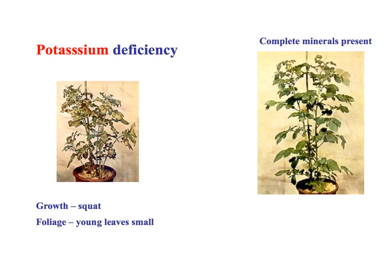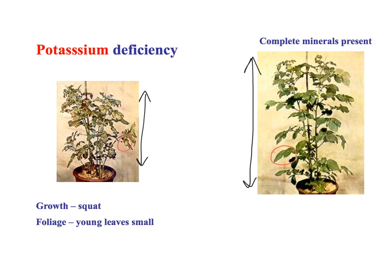Potassium deficiency looks quite similar. We've got quite squat, small growth. You can see potassium deficiency is causing growth issues - we've got young leaves that are very small. If we just look at that leaf compared to the healthy one, you can see the clear difference in size. So that's a potassium deficiency.